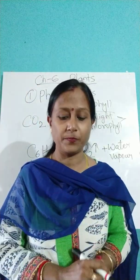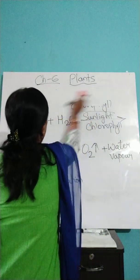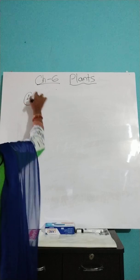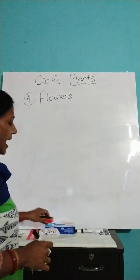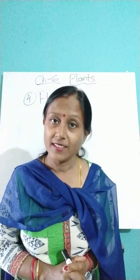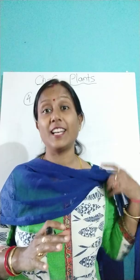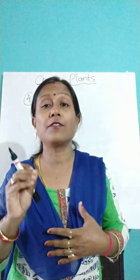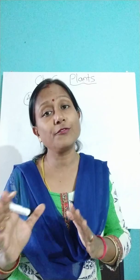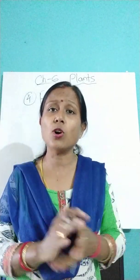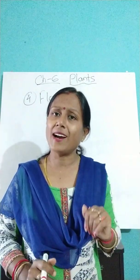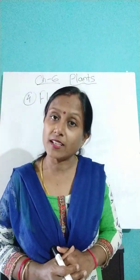So we have covered photosynthesis and transpiration. Now let's see the next important part of the plant body — that is flowers. Flowers are the attractive part of the plant body because they are very colorful, give a very nice odor, and come in different varieties of sizes and shapes. As a whole, flowers make the plant look very bright and attractive. Flowers are known as the reproductive part of the plant body.